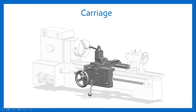The carriage of the lathe machine is located between the headstock and tailstock. The basic function of the carriage is to support, guide, and feed the tool against the job during operation. The carriage assembly of the lathe consists of a number of components that support, move, and control the tool.